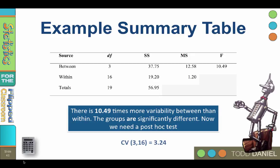That means that there is 10.49 times more variability between groups than there is within groups. Remember that our critical value is 3.24. Because the f of 10.49 exceeds the critical value of 3.24, this f-ratio is statistically significant. This tells us that there is a significant difference between the four regions in number of complaints about Wicked Witches.